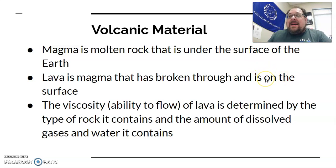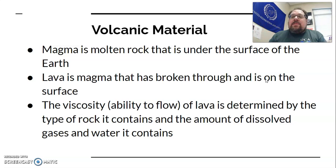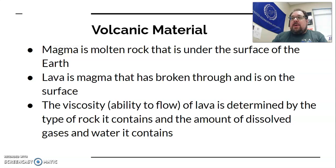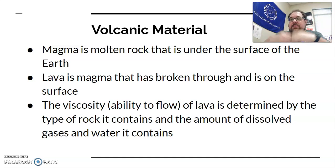Hawaiian islands have very runny lava, which is why they're big, wide, and flat. A mountain like Mount St. Helens might have very thick, viscous lava, which is why it builds up into a big mountain and eventually explodes. Hawaii, because the lava is so runny, just runs out and doesn't have big massive explosions.